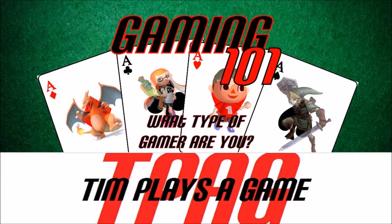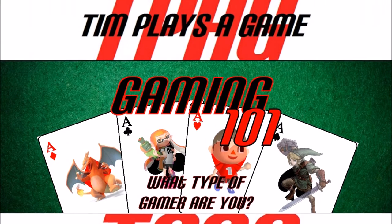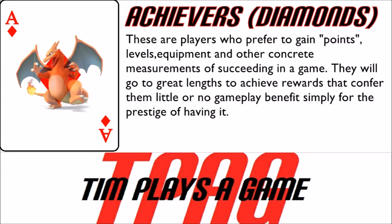Now that we have a better understanding of Richard Bartle and the Bartle Taxonomy of Player Types, let's take a closer look at these gamer personality types. First, the Achiever, represented by the Diamond, is a gamer type that prefers to gain points, levels, equipment, and other concrete measurements of succeeding in a game. Achievers will go to great lengths to achieve rewards that confer little or no gameplay benefit simply for the prestige of having it. Single player achievers will beat games and look for special endings, while multiplayer achievers will show off their skills and elite status to others. Achiever is the style of play most targeted by the MMORPG genre.